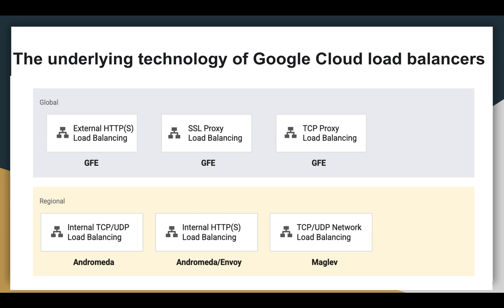Next, what is Andromeda? Andromeda is a Google Cloud software-defined network virtualization stack. What is Maglev? Maglev is a distributed system for network load balancing. Next is Envoy proxy — it is an open-source edge and service proxy designed for cloud-native applications.